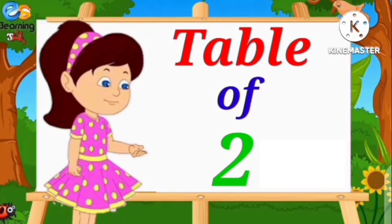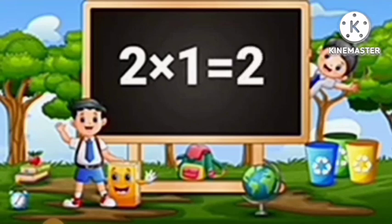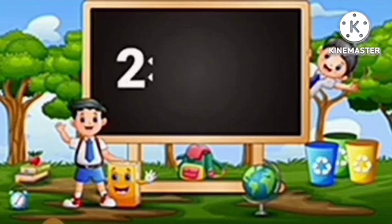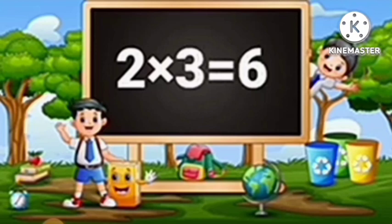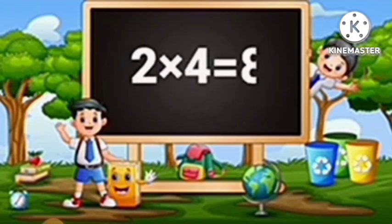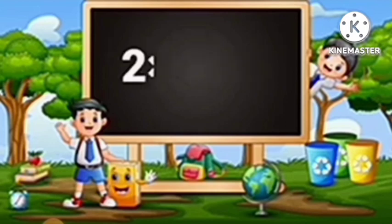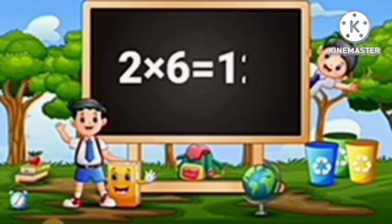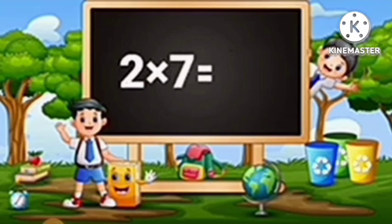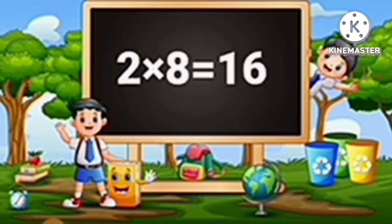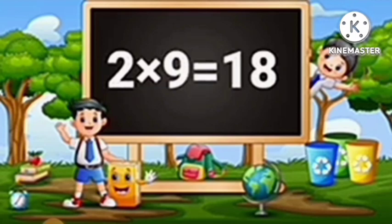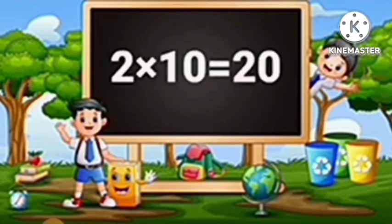Table of Two. Two ones are two. Two twos are four. Two threes are six. Two fours are eight. Two fives are ten. Two sixes are twelve. Two sevens are fourteen. Two eights are sixteen. Two nines are eighteen. Two tens are twenty.